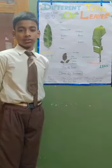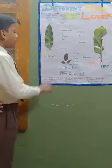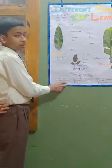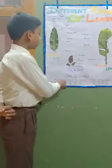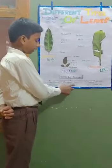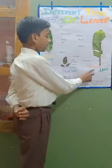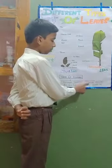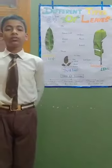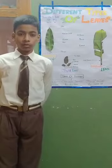A mango leaf is an example of reticulate venation. A tulsi leaf is also an example of reticulate venation. A banana leaf is an example of parallel venation. So this was the end of my science project. Thank you so much.